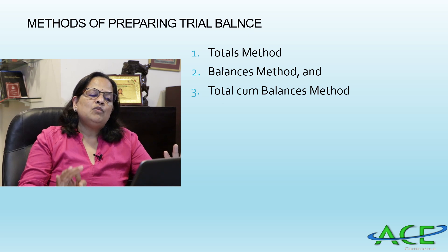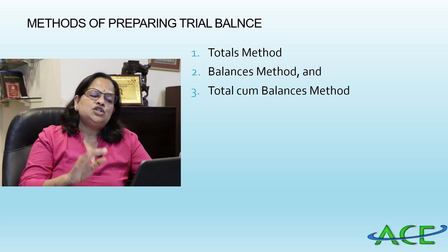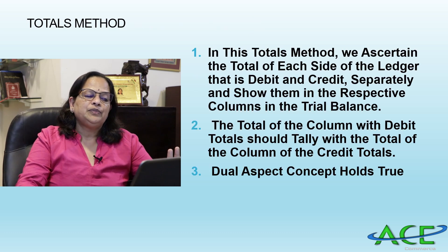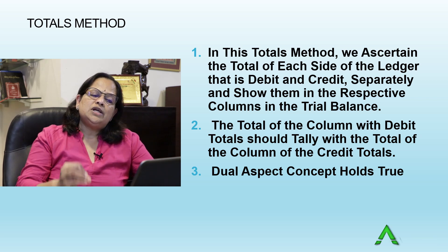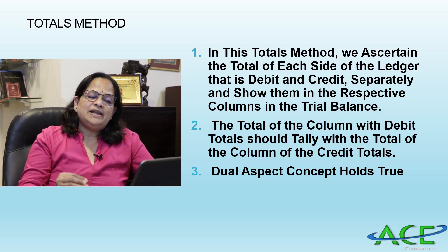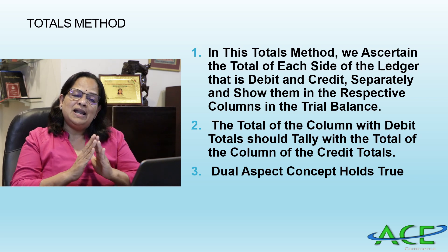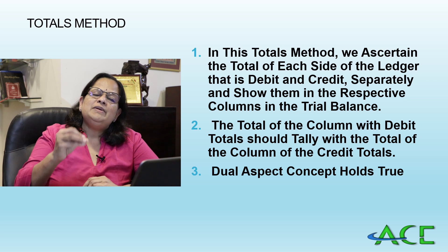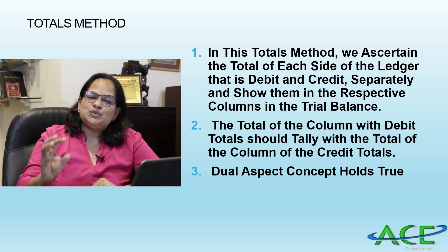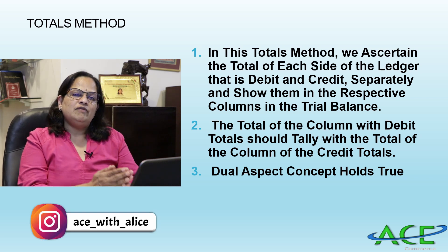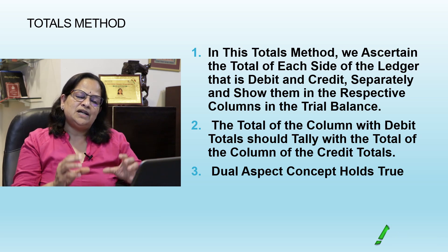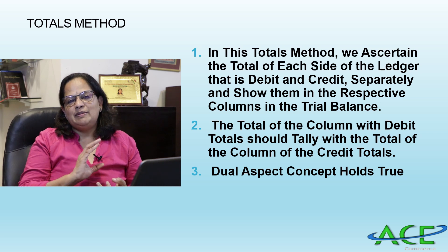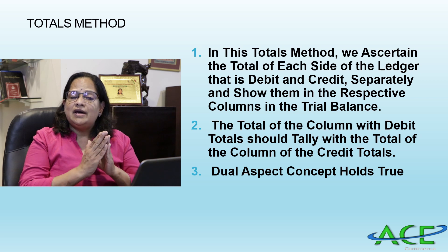There are three methods for preparing the trial balance: the totals method, the balances method, and the totals-cum-balances method. We follow the balances method, which is the most popular. In the totals method, we ascertain the total of each side of the ledger — debit and credit — separately and show them in the respective columns in the trial balance without balancing the account. The total of the debit side column will equal the credit side column as per double entry principles.